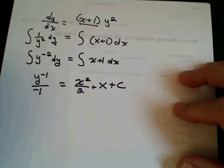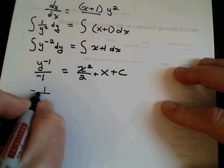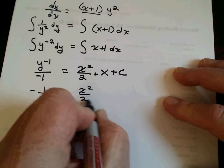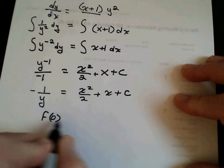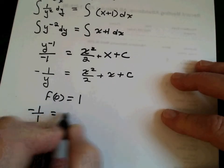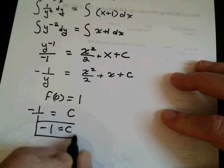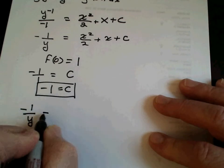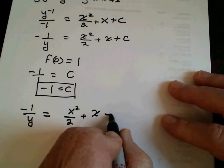Instead of going through all that, we just have one simple constant. I'm going to rewrite it without the negative exponent: negative 1 over y is equal to x squared over 2 plus x plus c. Let's say I gave you the point f(0) = 1. That becomes easy: negative 1 over 1 equals 0 plus 0 plus c, so c is equal to negative 1. Then we substitute in — negative 1 over y is equal to x squared over 2 plus x minus 1.